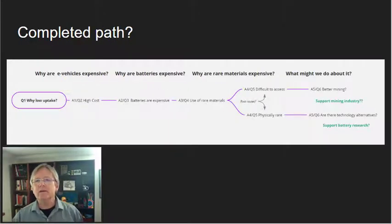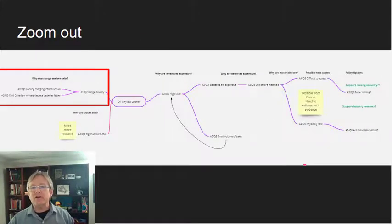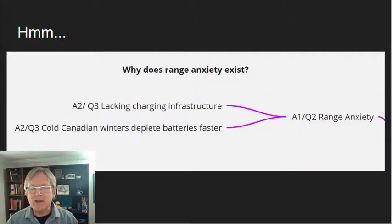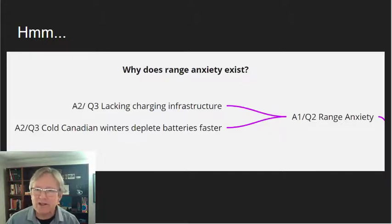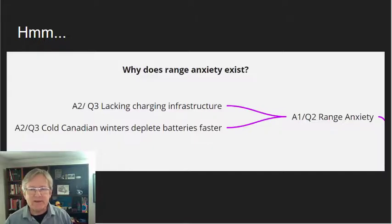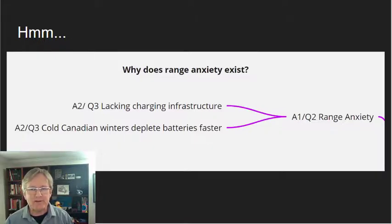If we zoom out again to the whole path we just went down, we can see the logic of this one line of inquiry. If we zoom out even further to see the paths that we did not go down, we might be able to make some connections. For instance, that red box, what was that again? Looking at the range anxiety question, we see that the cold may deplete batteries faster. Hmm, that seems to relate somehow to the idea of supporting battery research. So we can link those two.